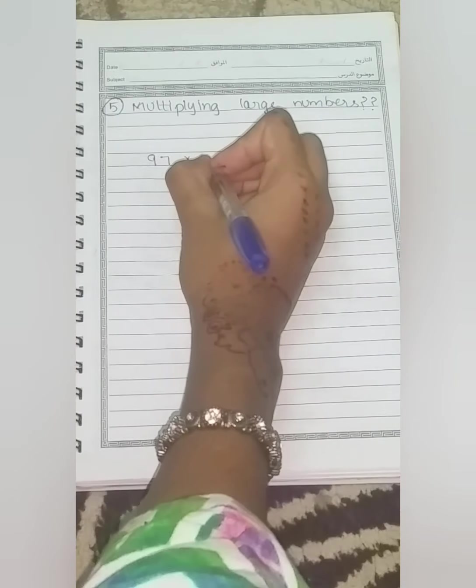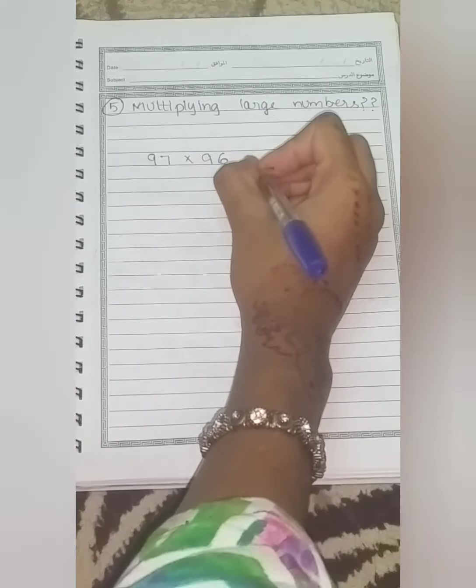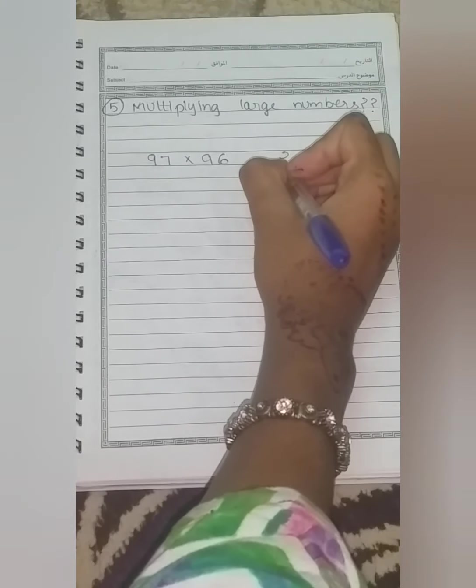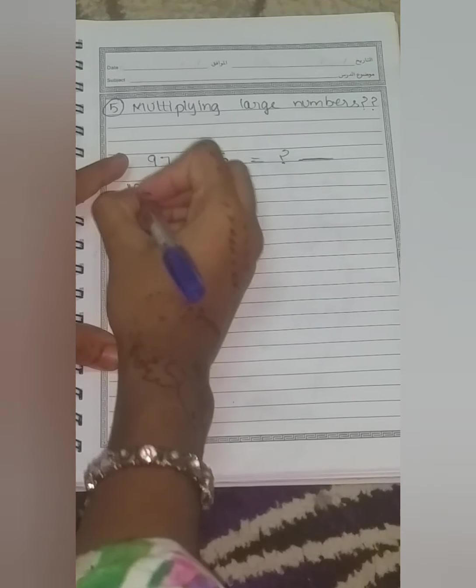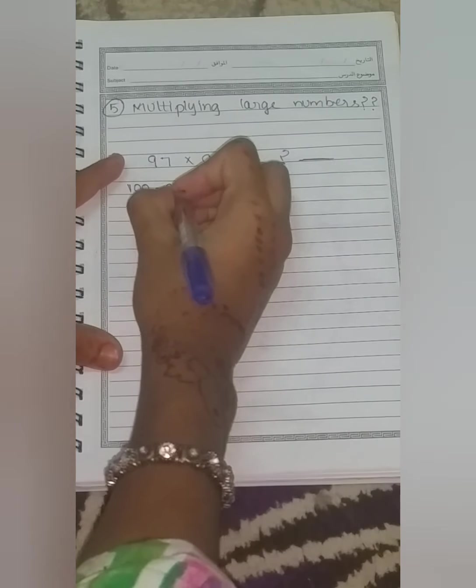So here we have the first number as 97 and next 96. So 96 and 97 when we multiply them together was the answer.